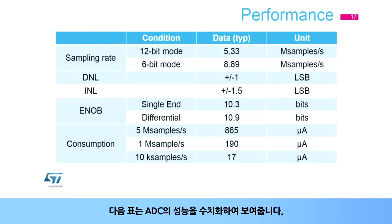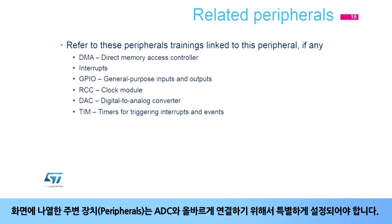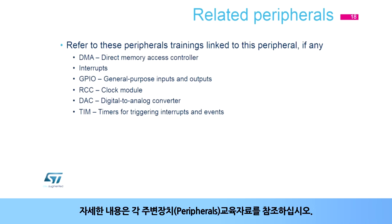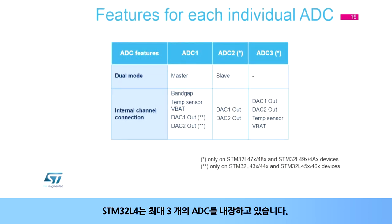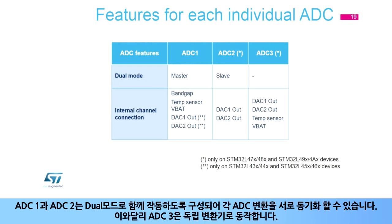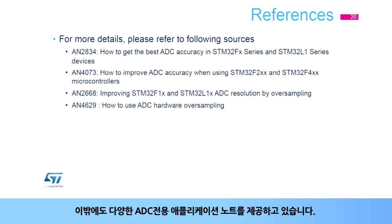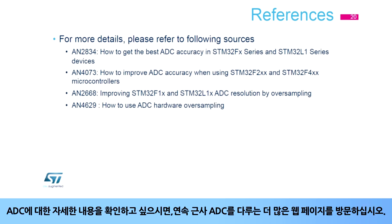The following table shows performance parameters for the ADC. These peripherals may need to be specifically configured for correct use with the ADCs — please refer to the corresponding peripheral training modules for more information. The STM32L4 embeds up to three ADCs. ADC1 and ADC2 can be configured to work together in dual mode, so that each analog-to-digital conversion can be synchronized between the two modules. ADC3 works as a standalone converter. Several application notes dedicated to analog-to-digital converters are available, and you can also visit a wide range of webpages discussing successive approximation analog-to-digital converters.